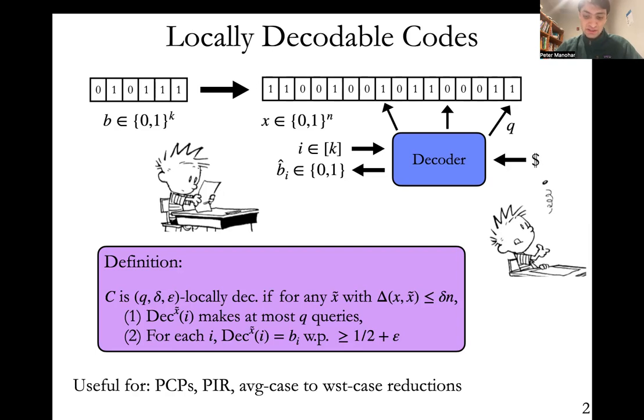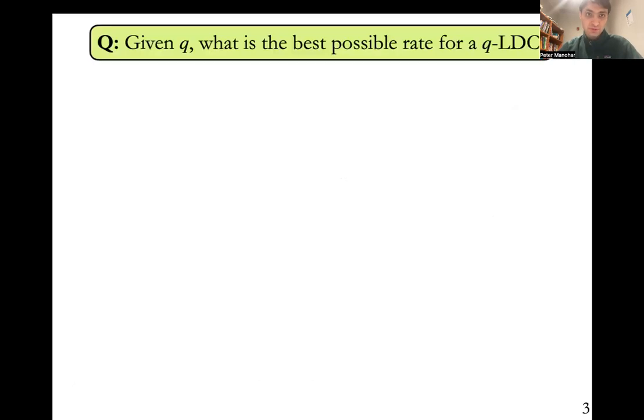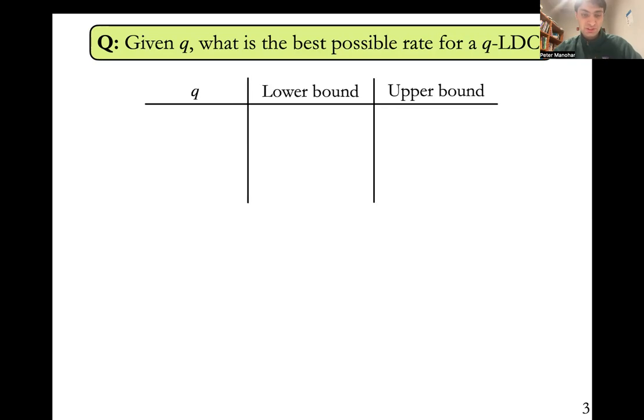As is the normal question you would ask in coding theory, the first question for locally decodable codes is, what is the best possible rate? We need to parameterize by q because the rate will change depending on how many queries we allow a locally decodable code to have. When q is n, then a locally decodable code is simply just a normal code. So we expect the rate to change with q. Let me put a table here explaining the current known results for q, where we have upper and lower bounds on the rate.